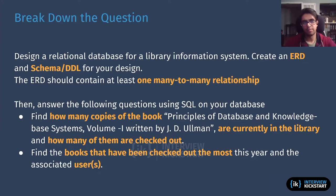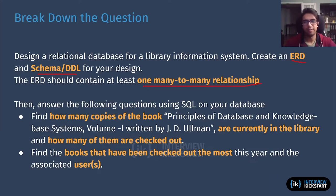The way I approach it is basically to start breaking it down from what we have in the initial prompt. We have pretty generic information — we need an ERD, schema DDL, pretty self-explanatory, and one many-to-many relationship. We're going to likely have multiple, but it's just required that our solution has one. That's pretty high level. But if we get into breaking down the actual SQL questions, that's where we get some interesting details on what we actually need to implement in our solution.